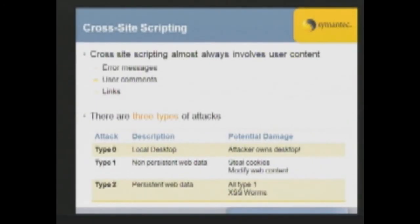Type 2 attack is actually with persistent data. What you see usually in, for example, guest books where you can leave a message - if you could break out of bounds and put some script in that message, it would be persistent for the next person who looks at the page. That's one of the most interesting attacks because once the data is saved, you have the opportunity to do things like cross-site script worms, which we've seen a couple of years ago in MySpace, where somebody was able to create a worm called 'Samy is My Hero.'